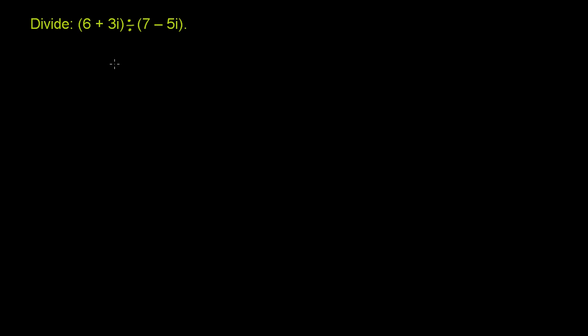Well, division is the same thing, and we could rewrite this as 6 plus 3i over 7 minus 5i. These are clearly equivalent. Dividing by something is the same thing as a rational expression where that something is in the denominator right over here.